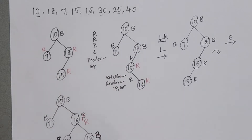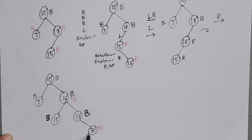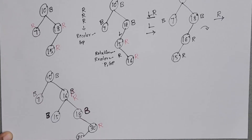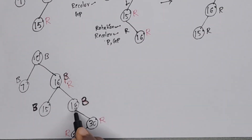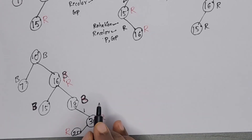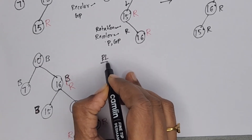Element 25: since 25 is greater than 16 and 18 but less than 30, we insert 25 as the left child of 30, colored red. Again there is a red-red conflict — new node is red, parent is red, but there is no sibling. When sibling is nil or black, we perform rotation. From the grandparent, the path goes right then left, so we perform an R-L rotation.